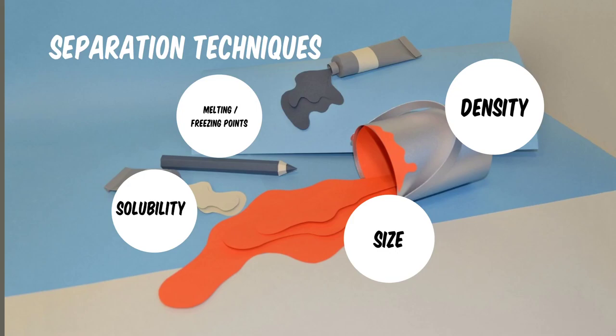Hello and welcome to the lecture for separation techniques. In this lecture we're going to be covering two main topics: physical properties — those are properties that an object maintains throughout that object that you can measure without doing any sort of chemical change to it — and also how we can separate things out using those physical properties. We're going to be focusing on three main types.